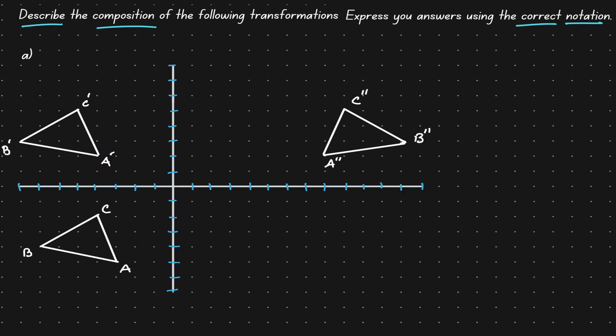Now let's try to identify the first transformation that was performed. Notice the triangle on the upper left. They all have one prime on top. So now the question becomes, what's the transformation that occurred for us to go from triangle ABC to triangle A'B'C'?